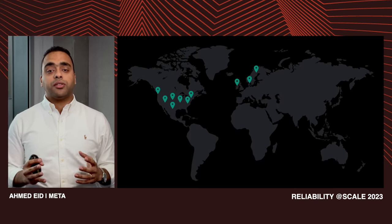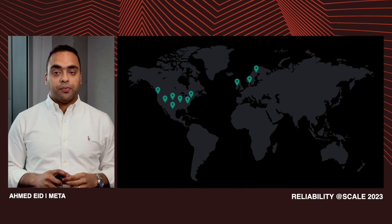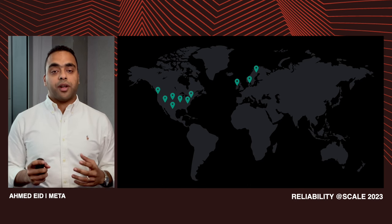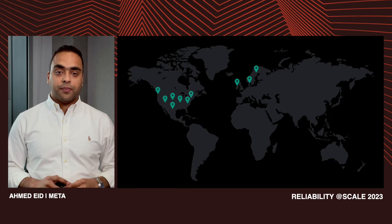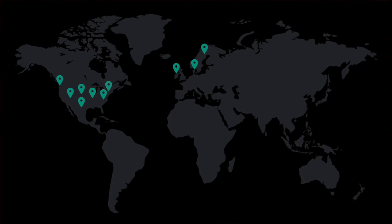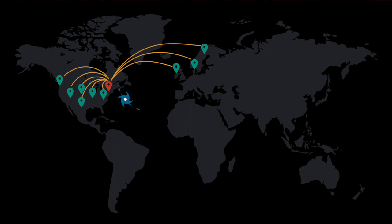After Hurricane Sandy, we started to look at the single-region failure mode to understand how we can prepare our infra to handle such an instance. Here is an abstraction for Meta regions across the world. Let's assume that one of our US regions has a potential risk due to natural disasters like a hurricane or winter storm, or even physical failures. Our strategy here will be to drain the region — meaning evacuate the database primaries outside the region and reroute traffic to the other healthy regions.